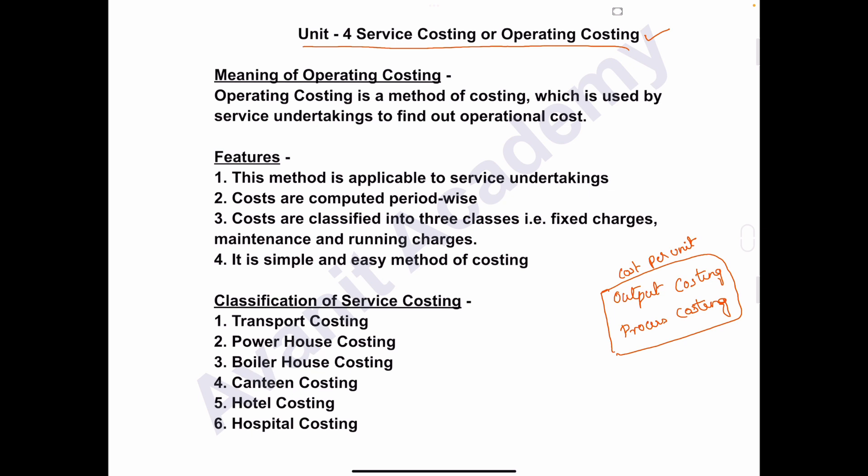To recap: industries engaged in production of goods adopt output costing or process costing method to find out cost per unit. Industries engaged in construction of buildings or civil engineering work adopt contract costing method. And industries that provide valuable services to the consumer adopt service costing or operating costing method to find out cost per unit or operational cost.